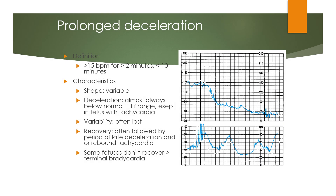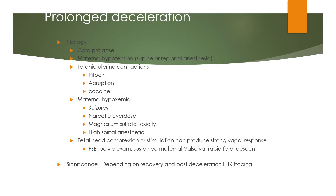Prolonged deceleration is defined as more than 15 beats per minute below baseline for more than 2 minutes but less than 10 minutes. It is almost always below the normal FHR range except in fetuses with tachycardia. Variability is often lost, and recovery is often followed by a period of late deceleration and rebound tachycardia; some fetuses do not recover and progress to terminal bradycardia. Etiology includes cord prolapse, maternal hypertension, tetanic uterine contraction, pitocin, abruption, cocaine, maternal hypoxemia, seizures, narcotic overdose, magnesium sulfate toxicity, high spinal anesthetic, fetal head compression, FSC, pelvic exam, and rapid fetal descent.